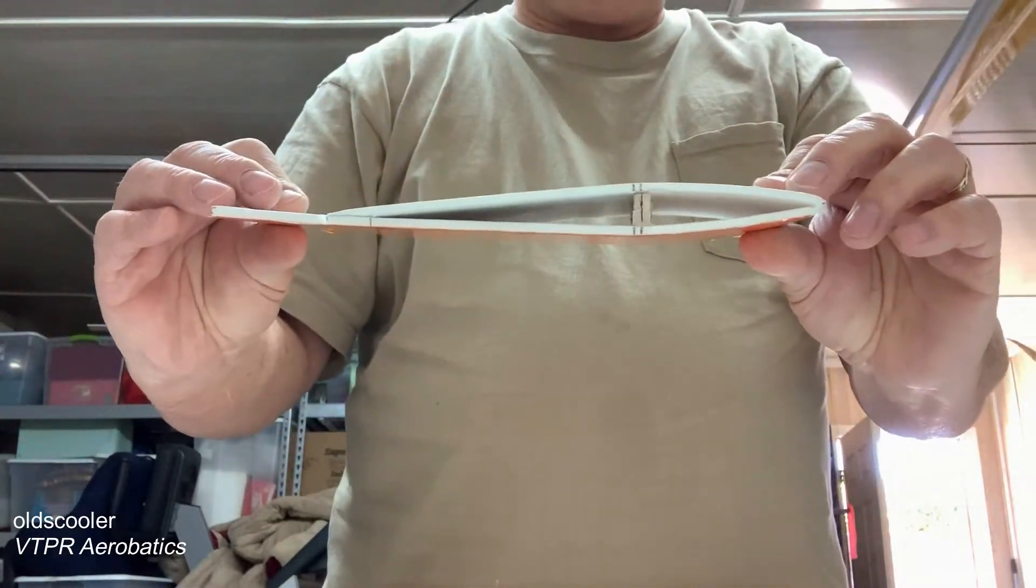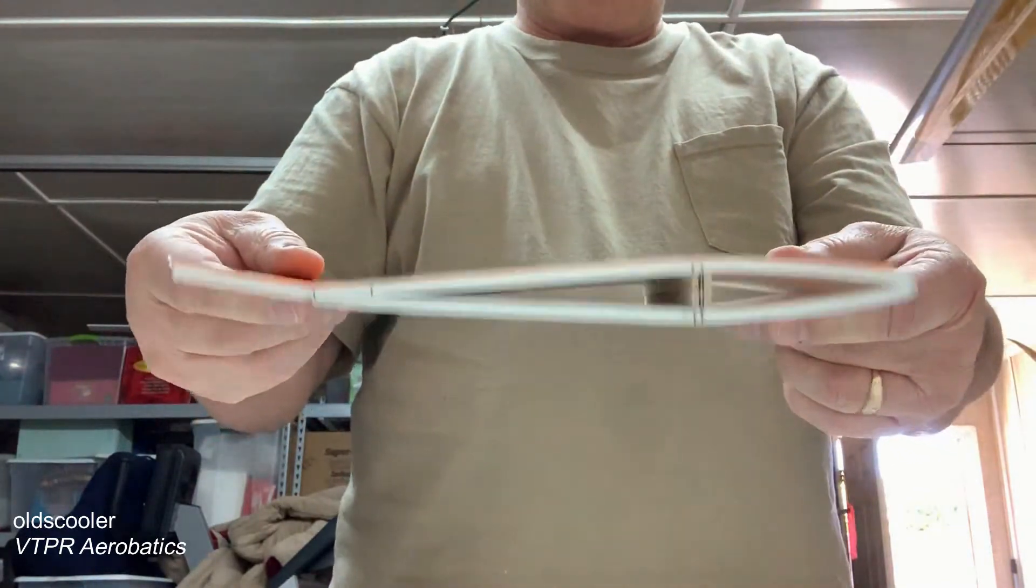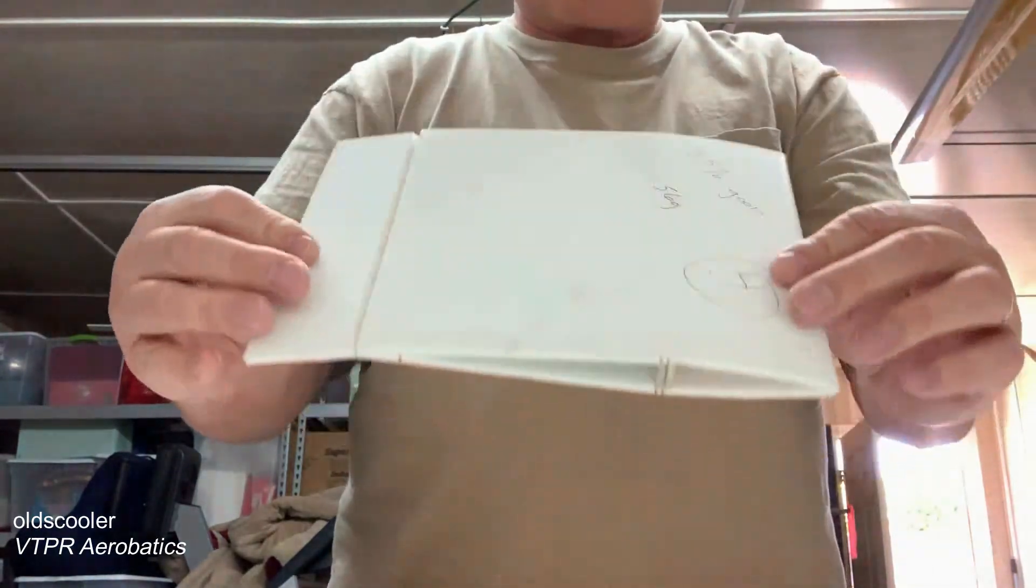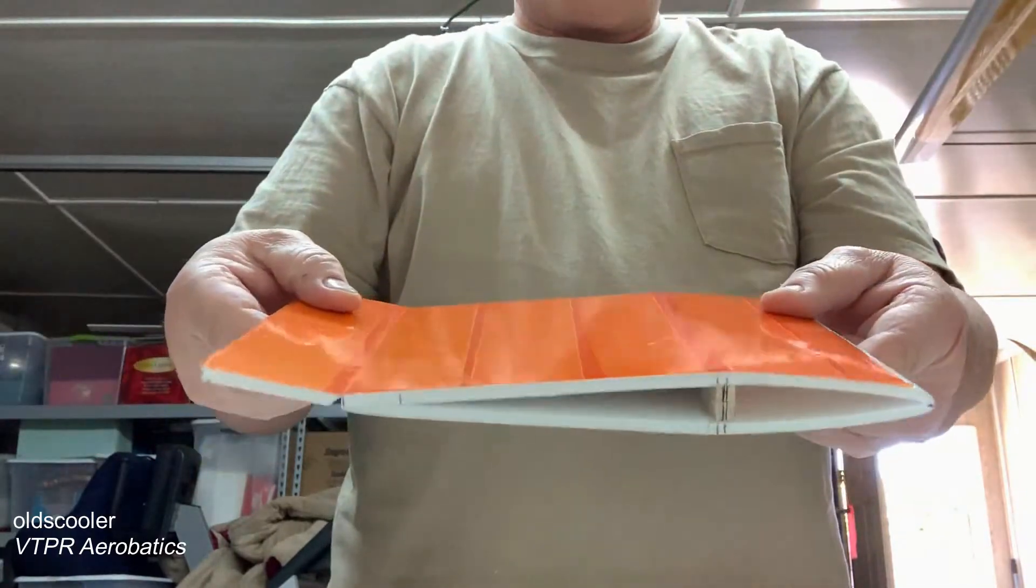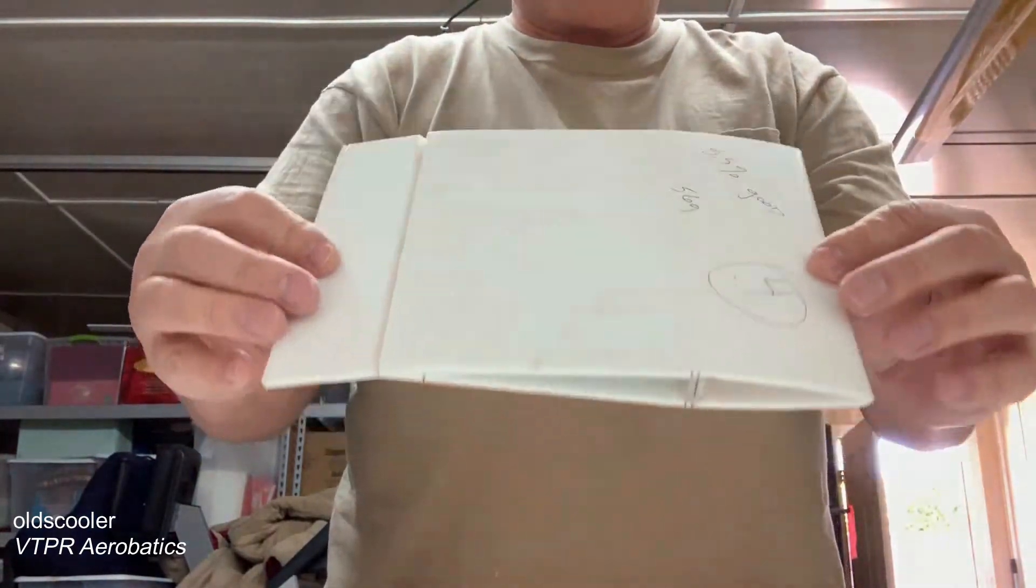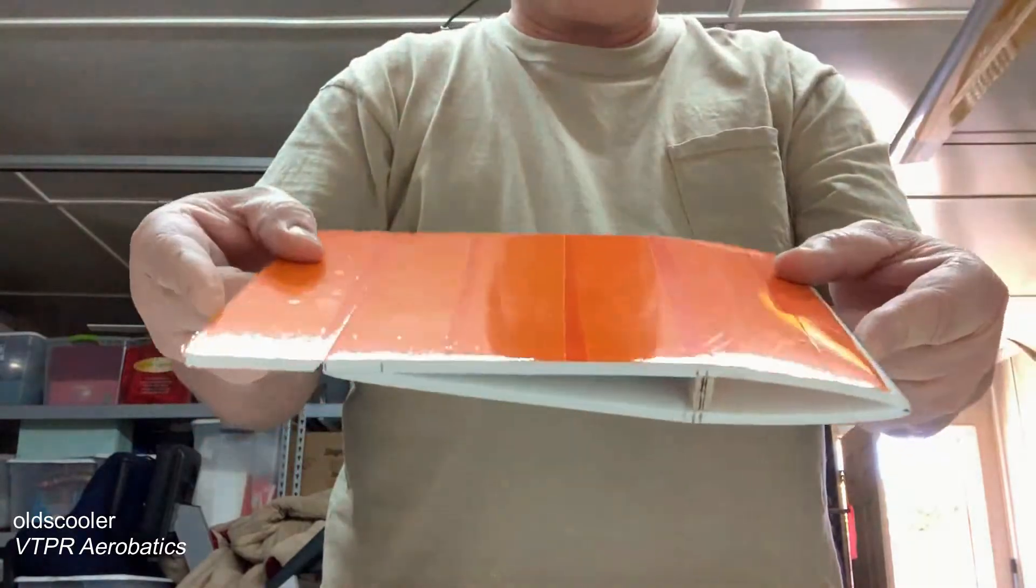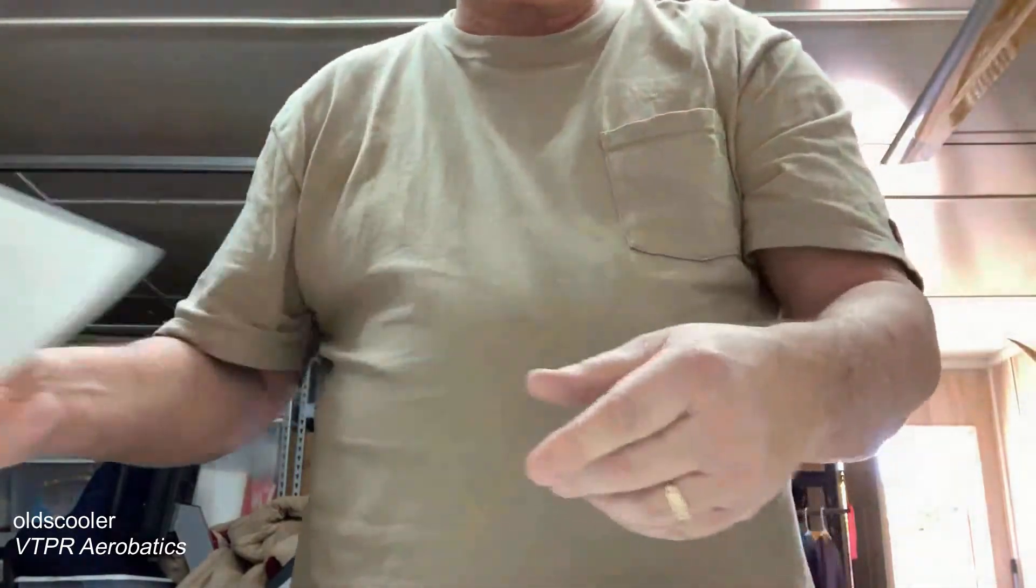This one is eight and a half percent thick. So it's a 10 inch root, so it's about 850 thousandths right about here. But that helped me decide to go ahead and go forth and make a sample wing, which is right here.